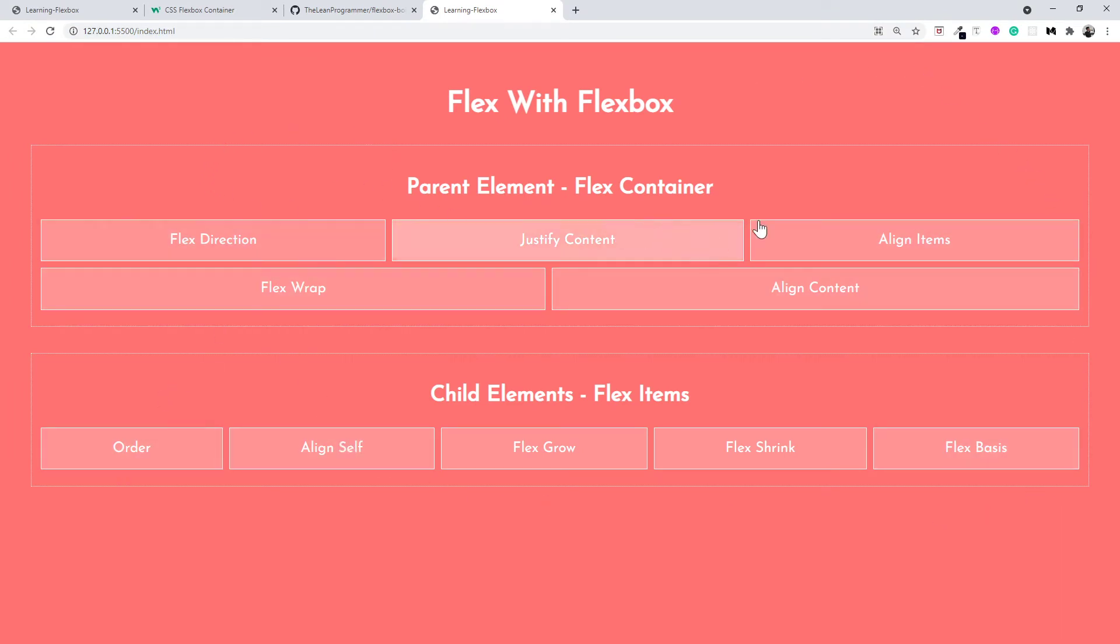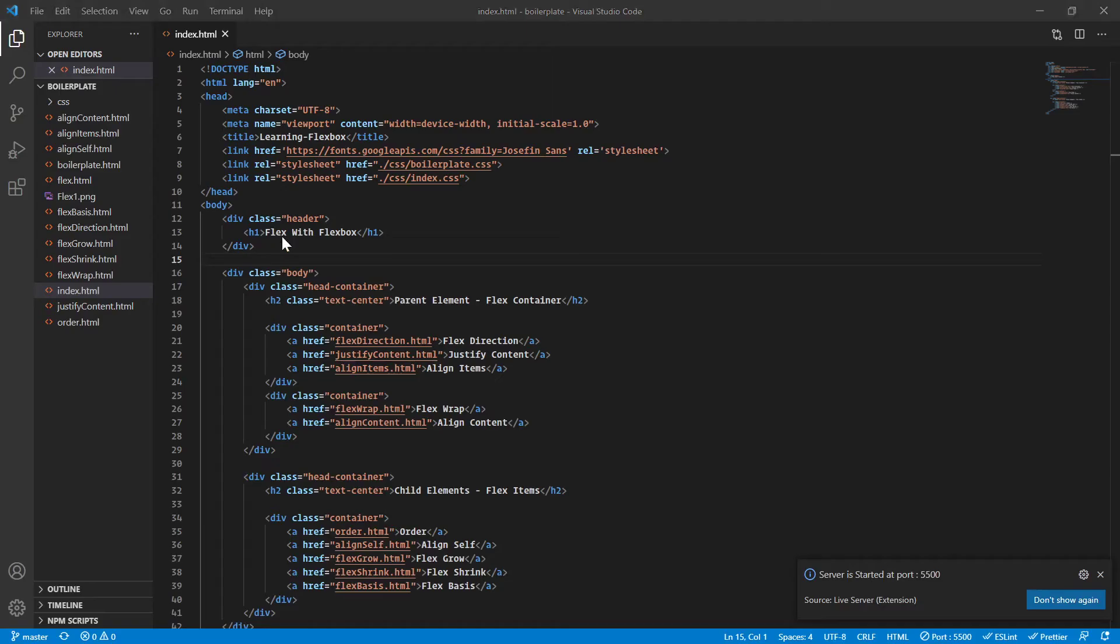So in index.html, I have already made a boilerplate for you so that you can directly use this. This has various properties inside CSS Flexbox, for example the flex direction, justify content, align items, and so on.